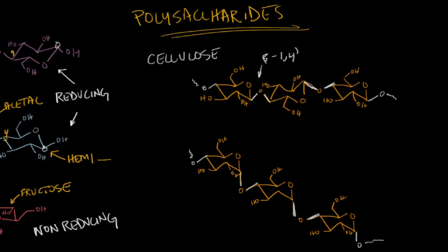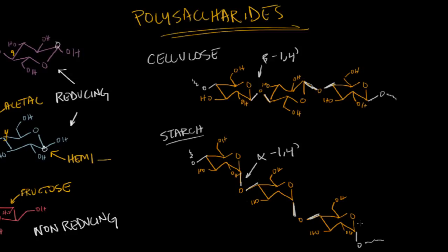Down here is another very common polysaccharide: starch. It's also made of repeating glucose units, but the difference is that these linkages are alpha 1,4. As humans, we have the enzyme to break down these alpha 1,4 linkages, so we can use starch — found in many plant products — as an energy source by breaking it down into glucose for cellular respiration. However, we lack the enzyme to break down the beta 1,4 glycosidic linkages of cellulose, so we can't use cellulose as an energy source.